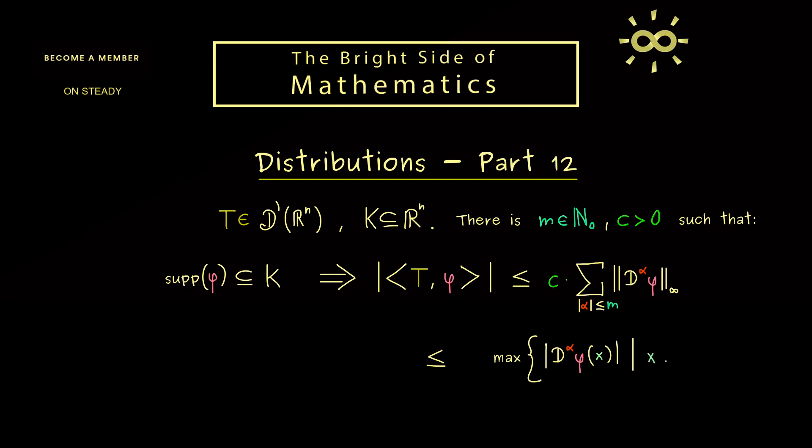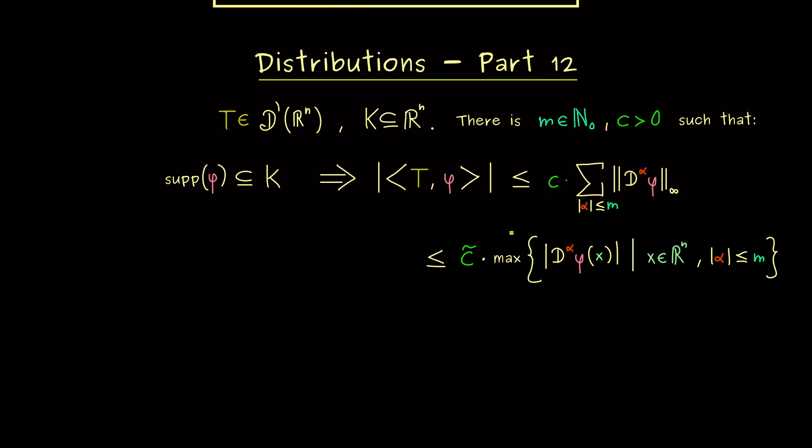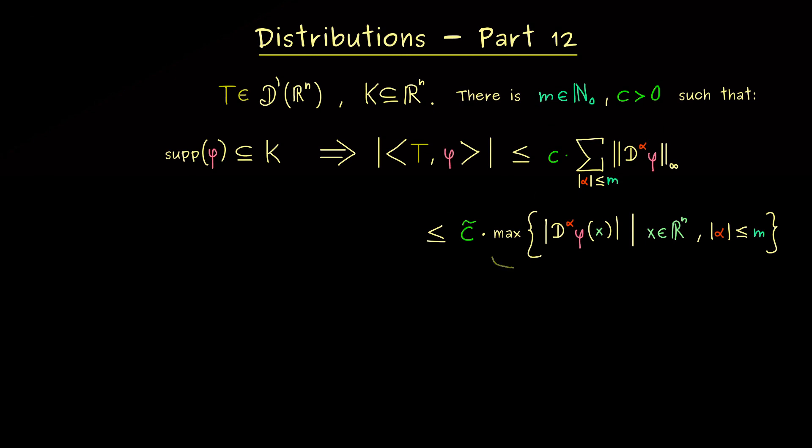So instead of the whole sum, I just write maximum of absolute values. Indeed, this is exactly what the supremum norm tells us. Therefore, we just go through all x in ℝⁿ. Moreover, as in the sum, we also go through all multi-indices α. So you should see instead of summing up all supremum norms, we now just take the largest one. Of course, we can do that and still keep the estimate here by just multiplying that with the correct factor. In other words, we will just change the constant here. Hence, instead of c, we just write c̃. Moreover, the whole maximum here I want to give a new name, so let's introduce a new norm.